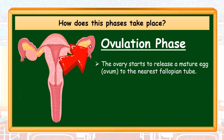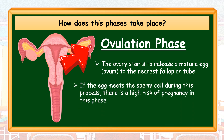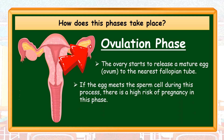Ovulation Phase: The ovary starts to release a mature egg, which is the ovum, to the nearest fallopian tube. If the egg meets the sperm cell during this process, there is a high risk of pregnancy in this phase.